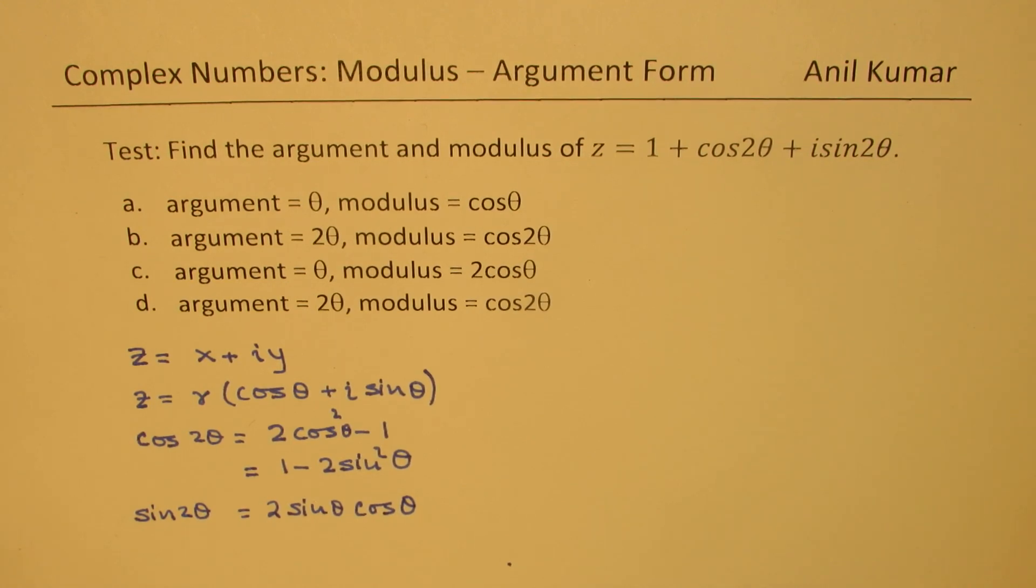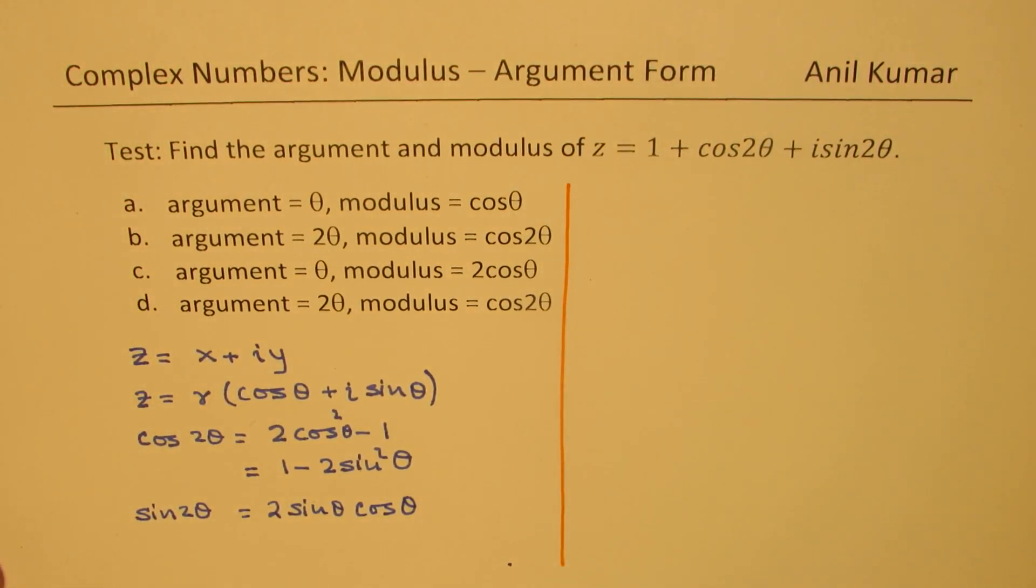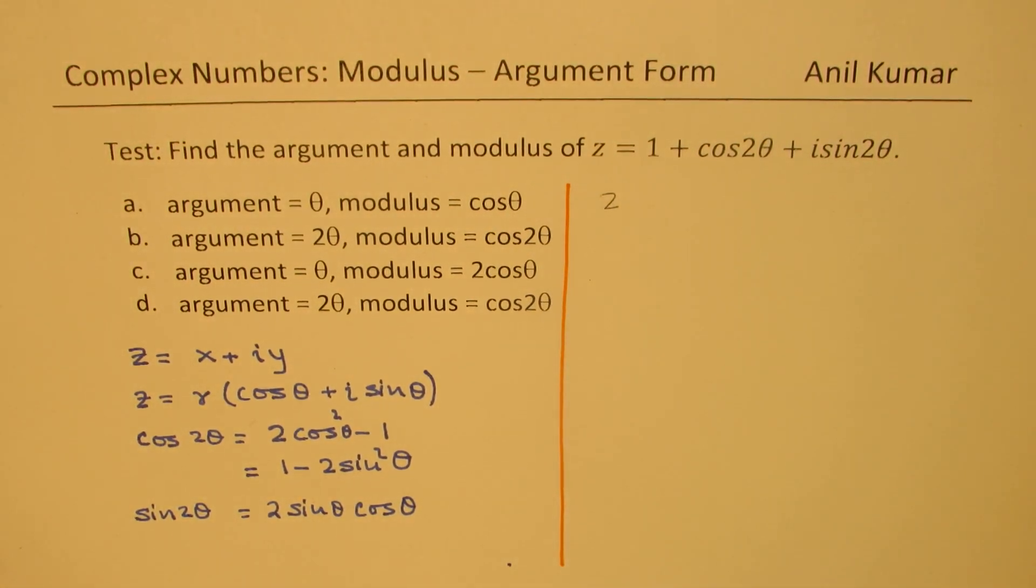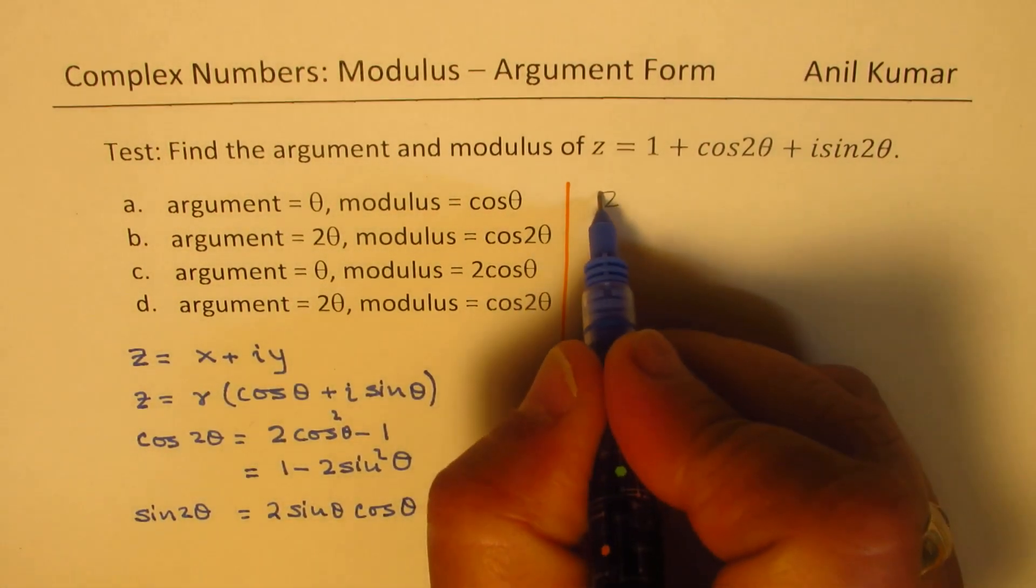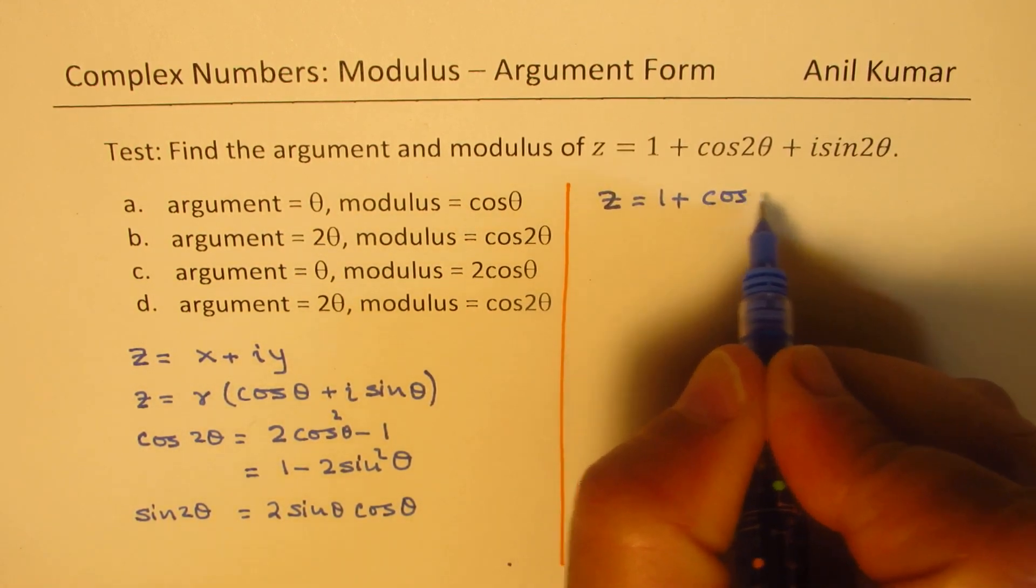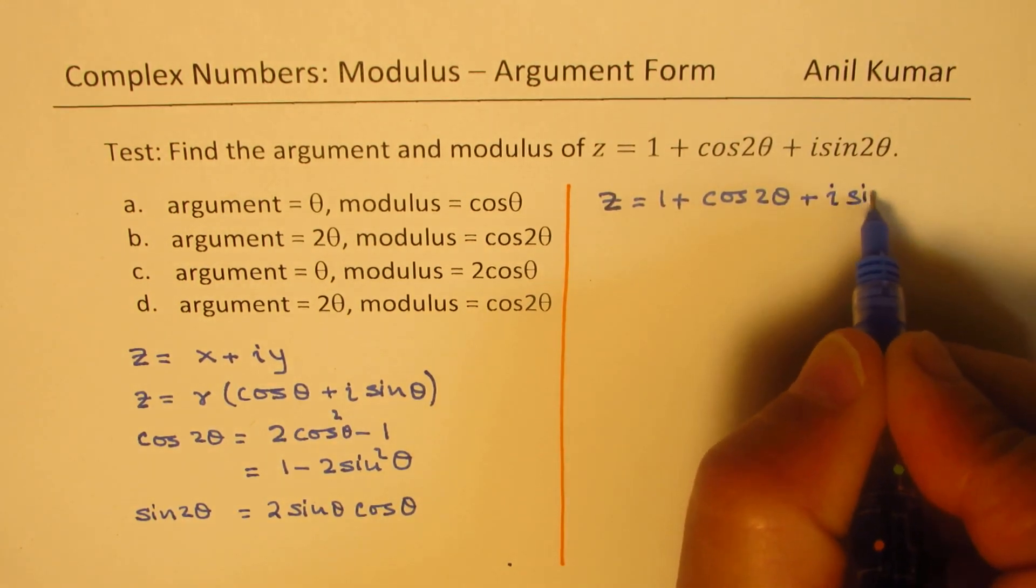Now, I think you have all the material. You may actually pause the video and answer it. Here is my solution. We are given that z is equal to 1 plus cos 2 theta plus i sine 2 theta.